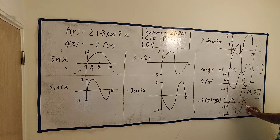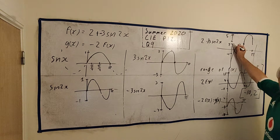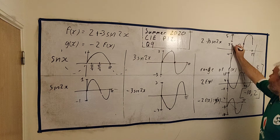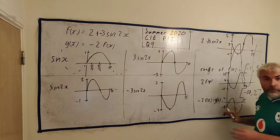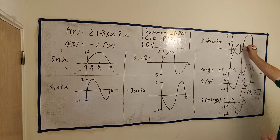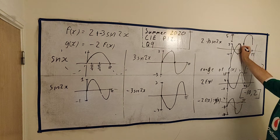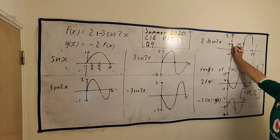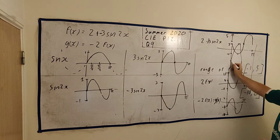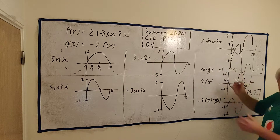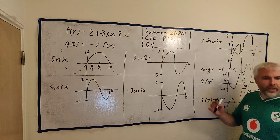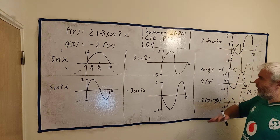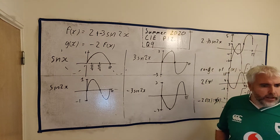It doesn't have to be too accurate, just make sure you put in all the numbers. For f(x): put in 2, put in 5, put in minus 1. When you're drawing g(x): make sure the highest point is around where the 2 is, the starting point is at minus 4, and then it goes down to minus 10.